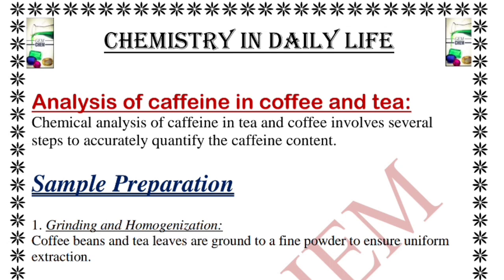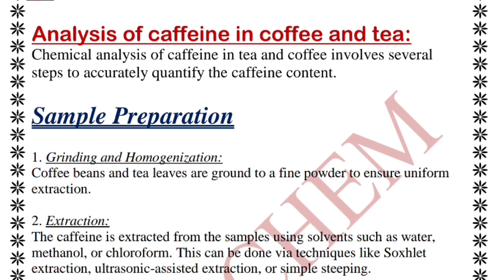Hey everyone, welcome to Gem Chem. This is the second part of Chemistry in Daily Life. One video is already uploaded on the channel — I will give the link in the description box as well as the i-button. In this video we are going to deal with analysis of caffeine in coffee and tea, detection of chicory level in toddy and coffee, and detection of methyl alcohol present in alcoholic beverages.